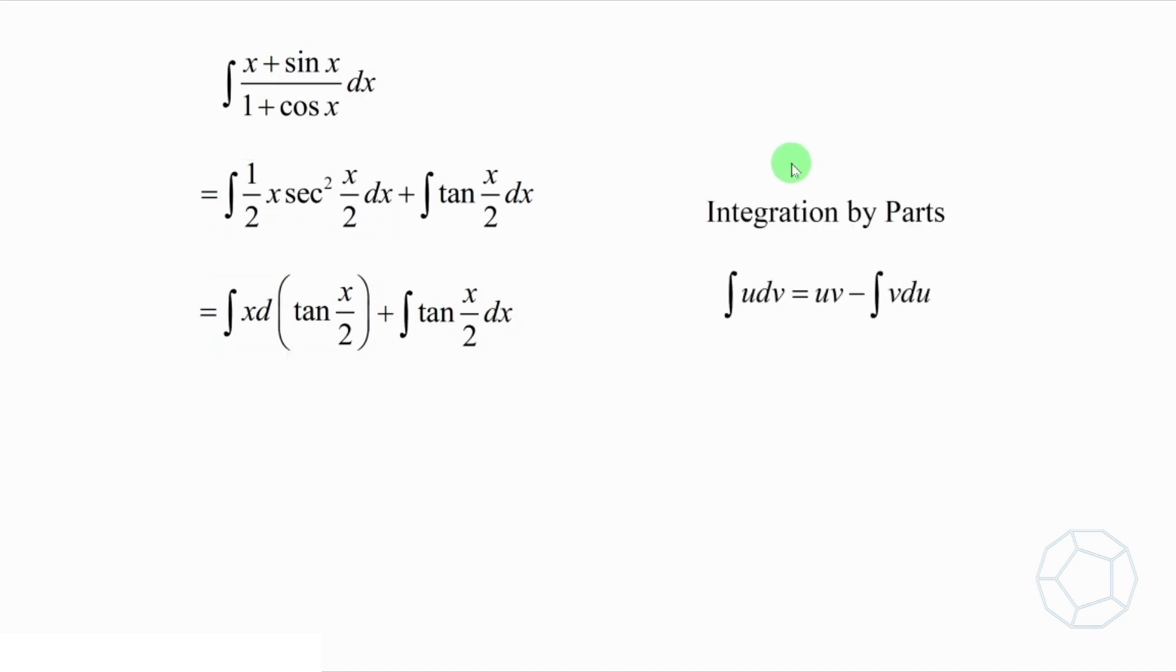We apply the formula of integration by parts. Here, u is equal to x and v is equal to tan x over 2. So, the first integral is x times tan x over 2 minus integrate tan x over 2 dx. And we just copy the second integral integrate tan x over 2 dx at the back. It's so fortunate that the last two terms cancel out.